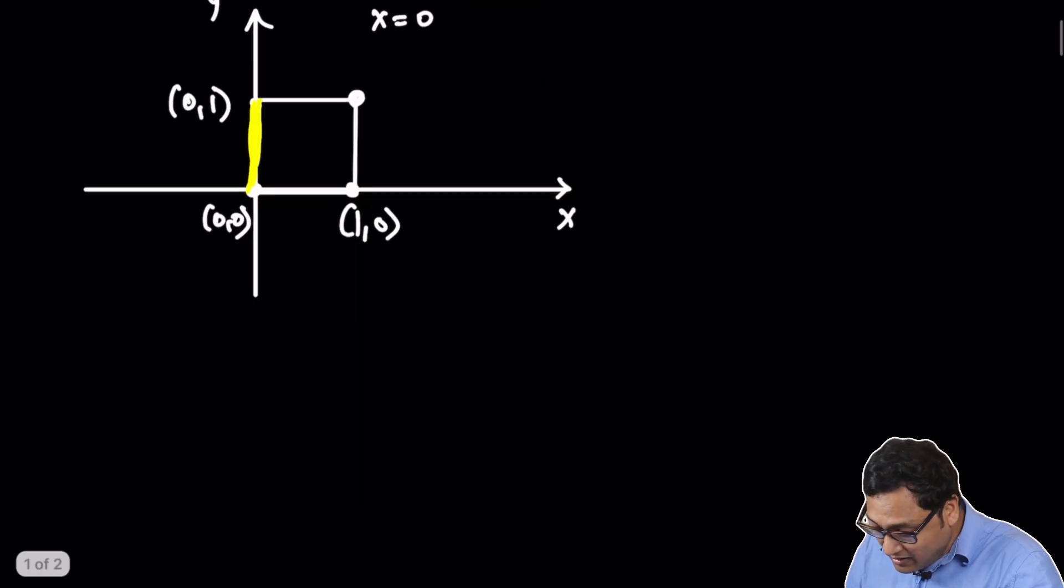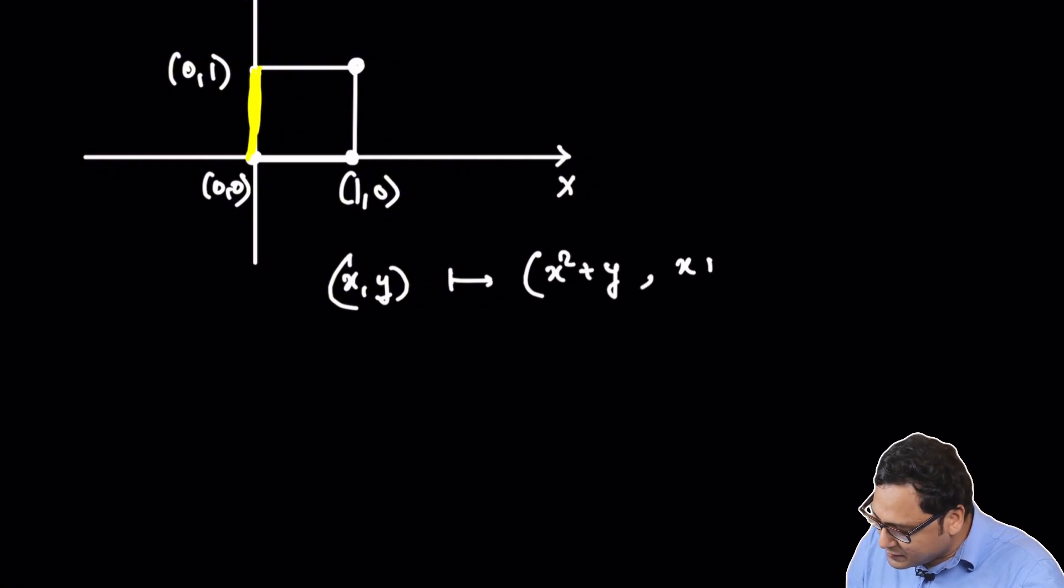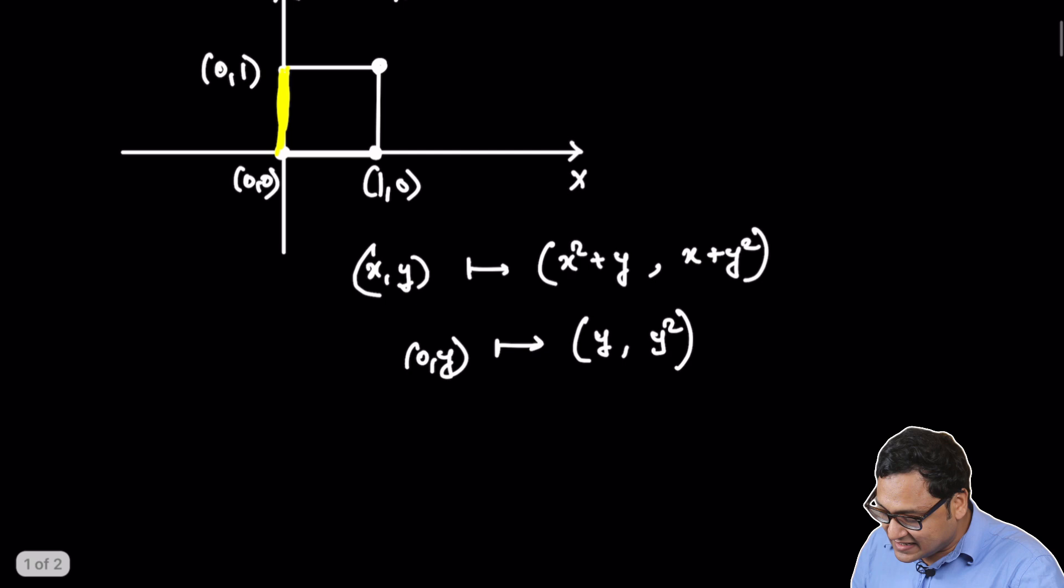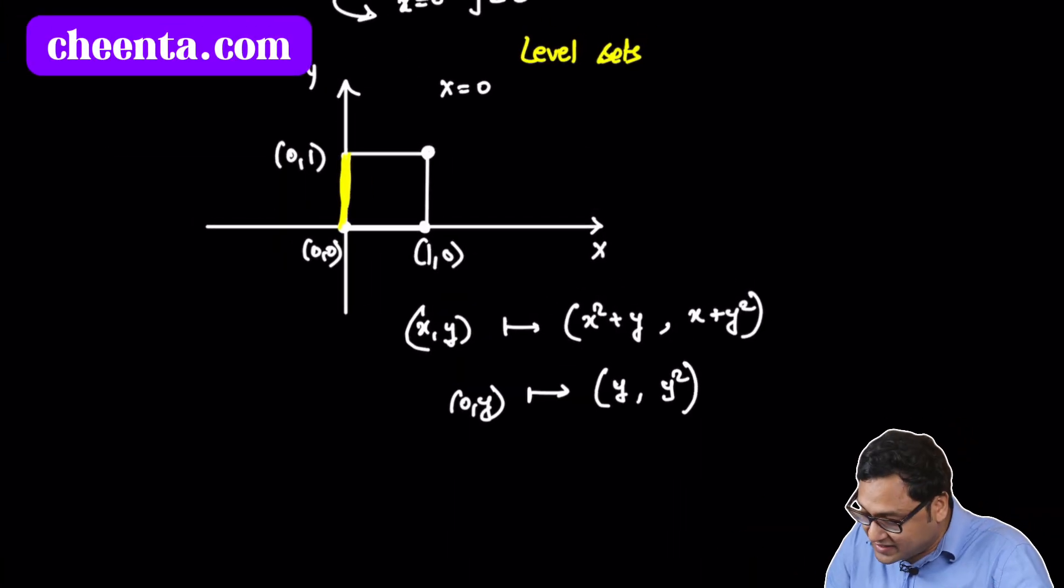My question is, where will the output go? What is the output of this line segment? If I just wanted to map this line segment from 0 comma 0 to 0 comma 1, making x fixed, that is 0. Well, let's do that. Let's see what happens. We know that x, y goes to x squared plus y comma x plus y squared. Now we know x is 0.